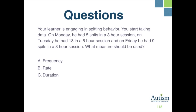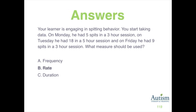Your learner is engaging in spitting behavior. On Monday he had 5 spits in a 3-hour session, on Tuesday he had 18 in a 5-hour session, and on Friday he had 9 spits in a 3-hour session. What measure should be used — A, frequency; B, rate; or C, duration? The correct response is B, rate, because the session lengths vary from day to day.